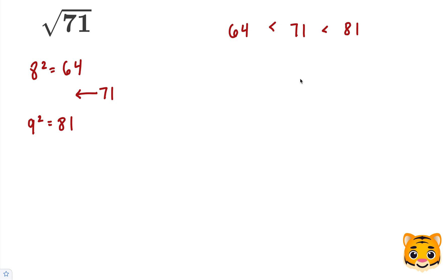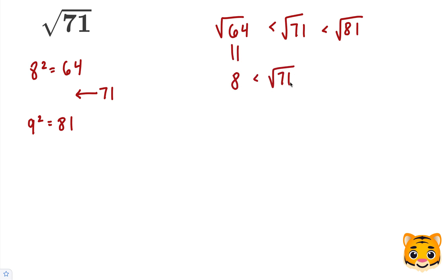Now we can take the square root of this inequality. The square root of 64 turns into 8, because 8 squared is 64. The square root of 81 turns into 9, because 9 squared is 81. Now we have the following inequality: the square root of 71 is between 8 and 9.